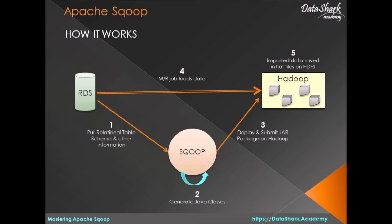In the fourth step, when the MapReduce job runs, it will pull the actual data from the employees table and store it into text files on HDFS. Step four is where Hadoop takes over entirely, and Sqoop has no interference in this step.